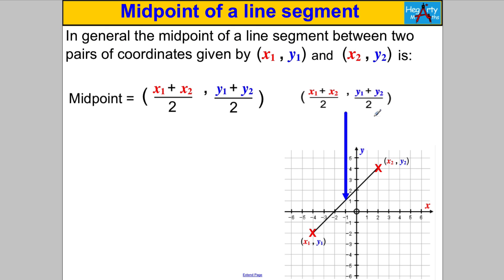In general, the midpoint of a line segment between two pairs of coordinates: if you have a coordinate (x₁, y₁) and (x₂, y₂), to find the midpoint you add the x's and divide by two to get the x-coordinate of the midpoint, and add the y's and divide by two to get the y-coordinate of the midpoint.